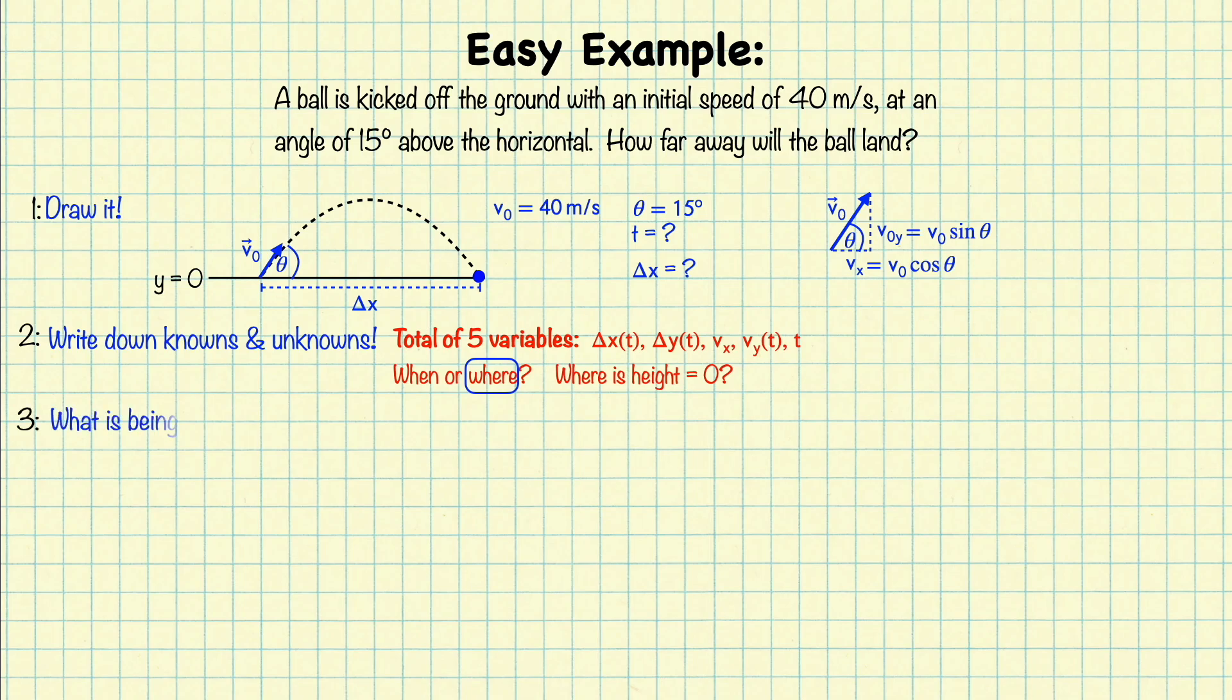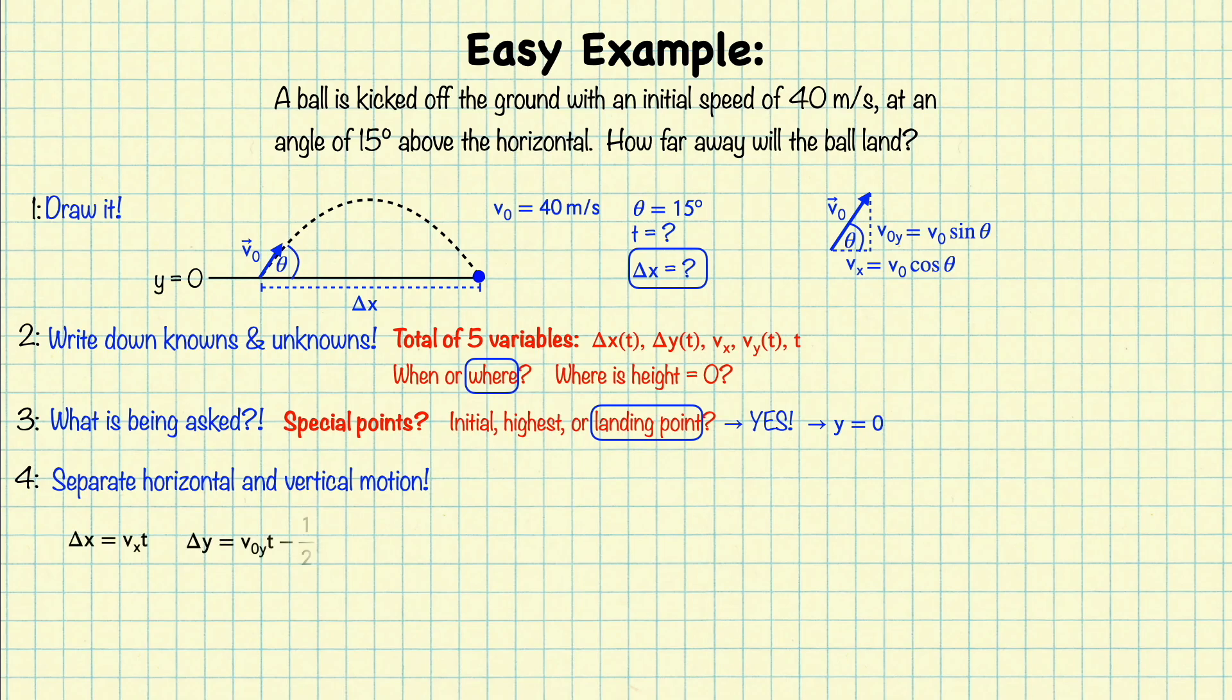Step 3 is to note what is being asked in the question, and does this question involve one of these special points? In our case, we're being asked what the range is, so we want to know what delta x is. And because this is a range problem, we're asking about the landing point. So yes, this is one of the three special points. It's good to note these special points because most projectile problems you'll see will involve one of them, although they don't have to. Our condition for this point is that y equals zero. Step 4 is to separate your horizontal and vertical equations. We have three kinematics equations, one for the x direction and two for the y direction. You want to make sure you don't mix these up and solve these two directions separately.